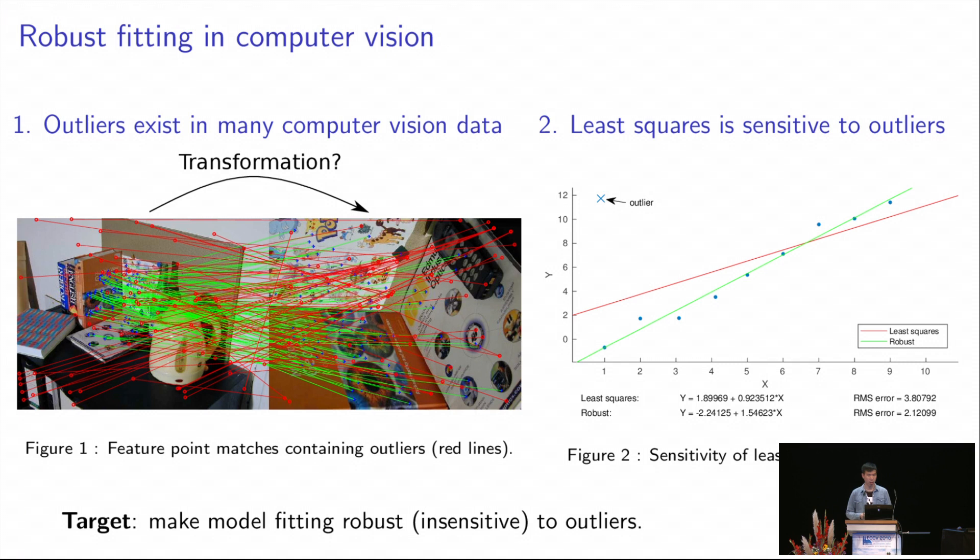For model fitting, as you can see in the right figure, a single bad outlier can drag the least square solution far away from the desired location. Therefore, our task is to perform robust fitting, which aims to make the model fitting procedure insensitive to outliers, so that we can find this green line.